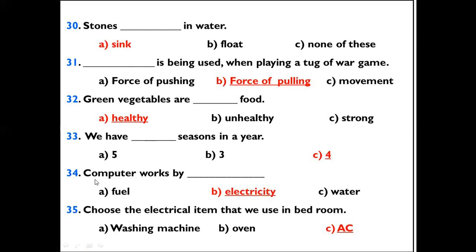Question 34: Computer works by dash. Options: Fuel, electricity, water. The right option is electricity. Computer works by electricity.